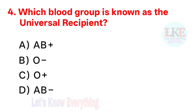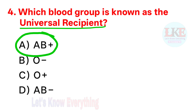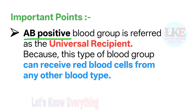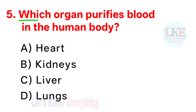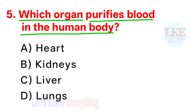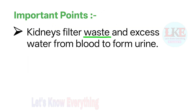Question number 4, also very important question: which blood group is known as the universal recipient? Right answer option A: AB positive. AB positive blood group is referred to as the universal recipient, because this type of blood group can receive red blood cells from any other blood type. Question number 5: which organ purifies blood in the human body? Right answer option B: kidneys. Kidneys filter waste and excess water from blood to form urine.